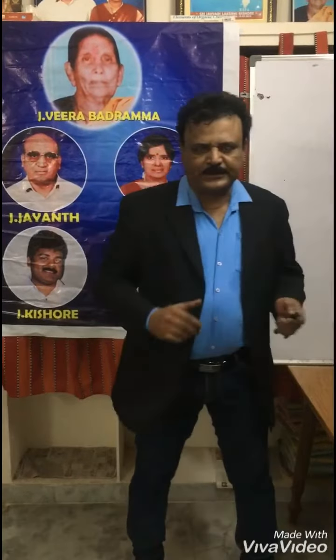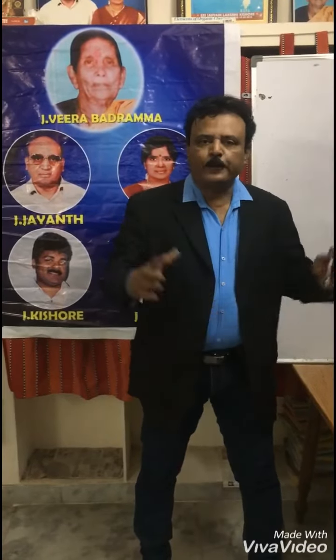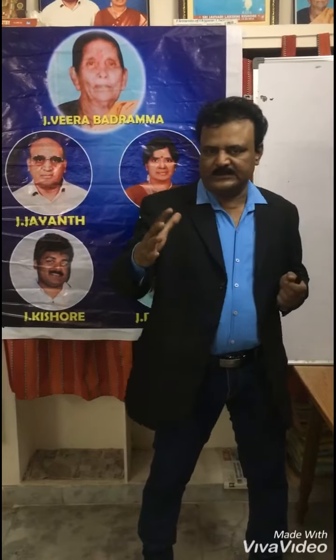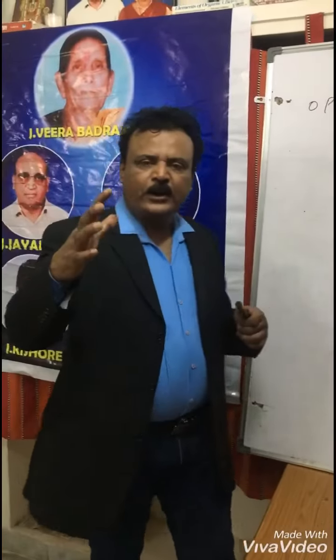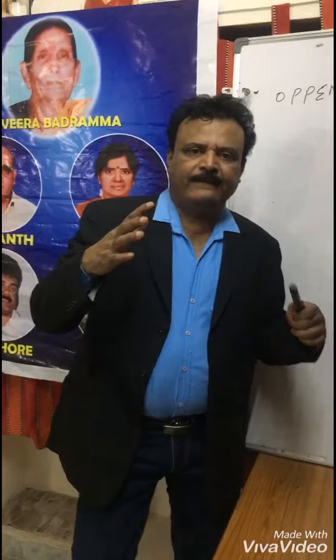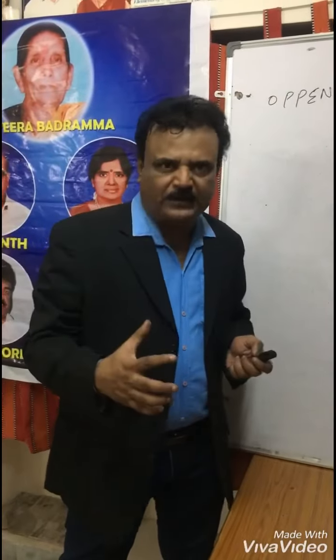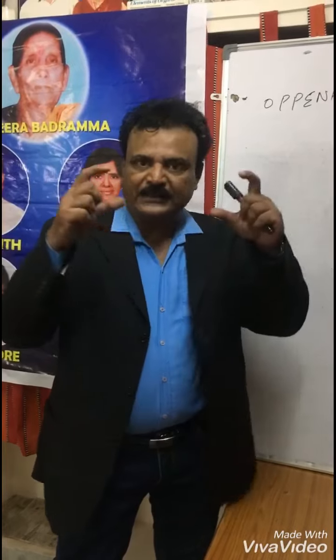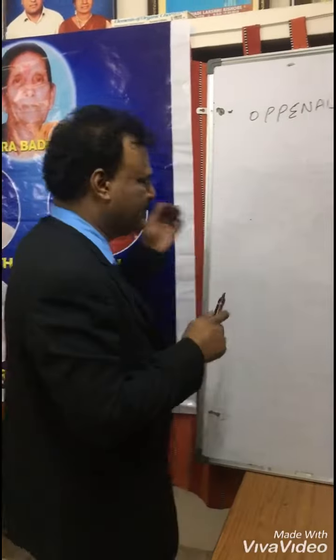Welcome to JRB JK Chemistry. Today our topic is Oppenauer oxidation. Secondary alcohols in the presence of aluminum alkoxide or aluminum isopropoxide and with the ketone, alcohols become ketones.